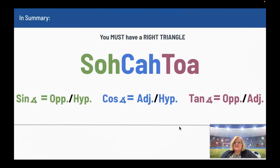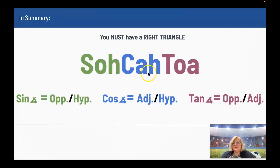In summary: you have to have a right triangle to apply SOHCAHTOA. The sine of an angle is opposite over hypotenuse, the cosine of an angle is adjacent over hypotenuse, and the tangent of an angle is opposite over adjacent.